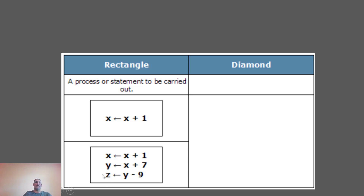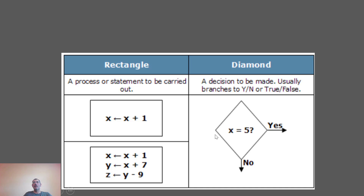Continuing with multiple process examples — Z is set to the value of Y minus 9. The other symbol we use is the diamond shape, which we use for a condition or branching. For example, 'Is X equal to 5?' If yes, we do certain tasks; if no, we do other tasks. When we have a false condition it means no or zero; when it's true it means yes or one as the output.